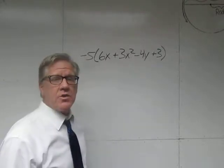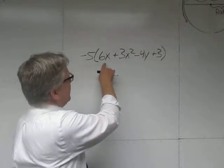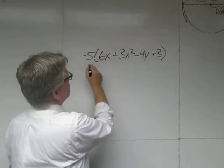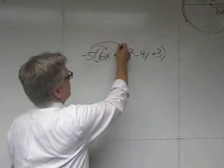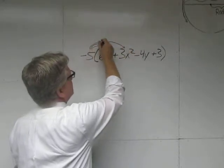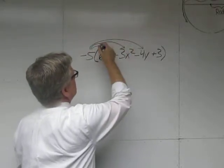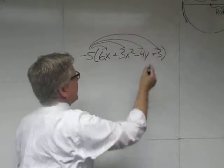So let's go ahead and use the distributive property here. We have negative 5, we're going to distribute this negative 5 times this, times this, times this, and times that.